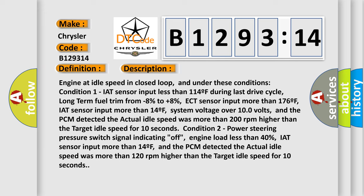System voltage over 100 volts. The PCM detected the actual idle speed was more than 200 RPM higher than the target idle speed for 10 seconds. Condition 2 - power steering pressure switch signal indicating off, engine load less than 40%.